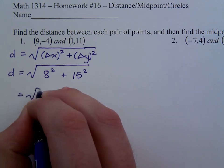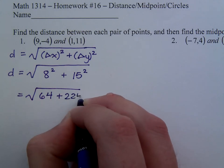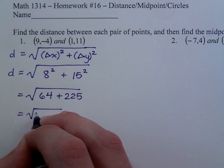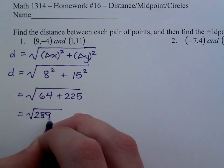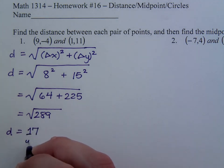So this guy gives me the square root of 64 plus 225. That's the square root of 289, and that is a perfect square, so the distance is equal to 17 units.